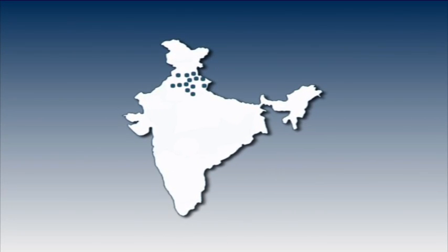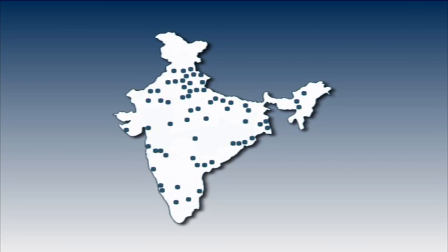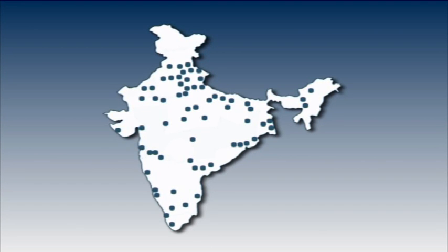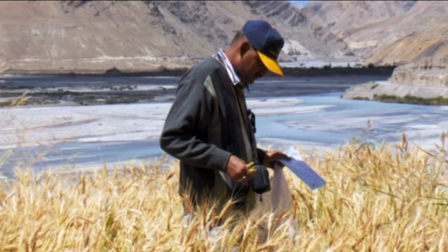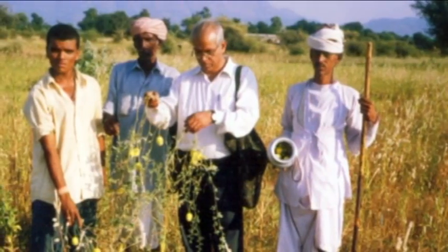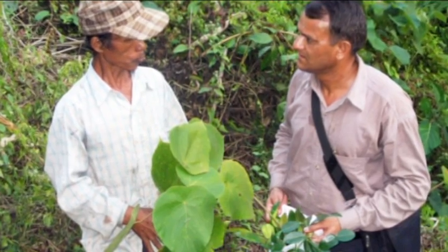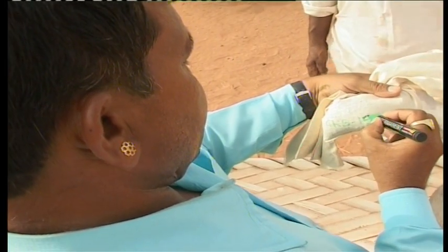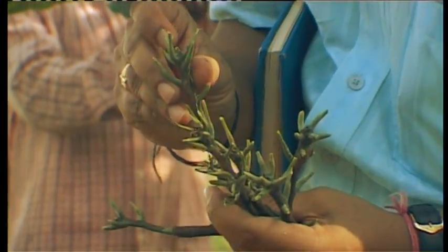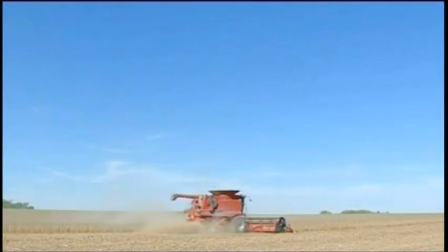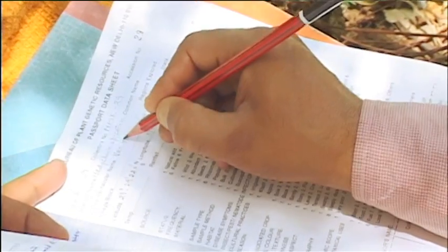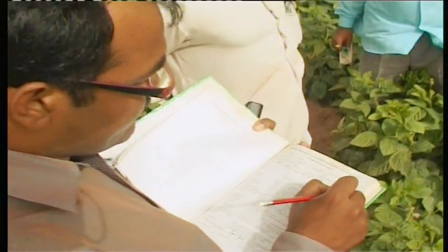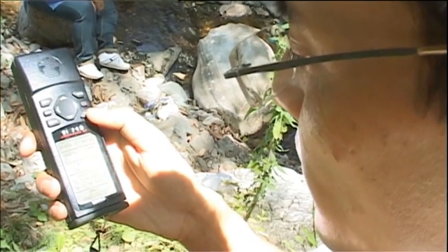NBPGR carries out various activities involved in PGR management in partnership with other crop-based ICAR institutes and state agricultural universities. Plant genetic resources are collected from different sources through exploration. During explorations, a team of researchers visit different parts of the country and collect plant genetic resources for its variability. Germplasm is collected in the form of mature healthy seeds, vegetative propagules, cuttings and budwoods from farmers' fields, farmers' stores, threshing yards, local markets and natural habitats. Important data like the name of plant, locality, habitat, date of collection and other information is recorded along with the ethnobotanical information.